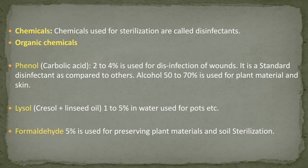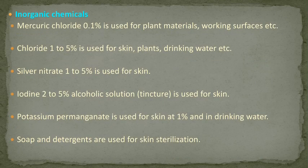Chemicals used for sterilization are called disinfectants. Organic chemicals: phenol, Lysol, and formaldehyde. Phenol is used at 2–4% and alcohol at 50–70%. Lysol is used at 1–5% and formaldehyde at 5% for sterilization of soil and plant materials. Inorganic chemicals: mercuric chloride 1% is used for plant materials and working surfaces; chlorine 1–5% is used for skin, plants, and drinking water; silver nitrate 1–5% is used for skin; iodine 2–5% alcoholic solution is used for skin and healing areas; potassium permanganate 1% is used for skin and drinking water. Soap and detergent are used for skin sterilization.